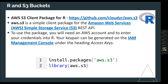The best way to use R and S3 buckets is the AWS.S3 client package for R, provided by Cloudyr. It's a simple package — an API wrapper for the S3 service. To use this package, you will need an AWS account and you'll need to create some credentials that you can enter into R through a key pair. It's very simple to use, and S3 is a very low cost service for basic use.